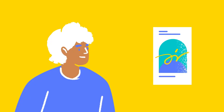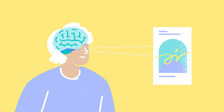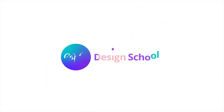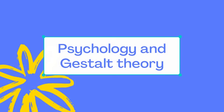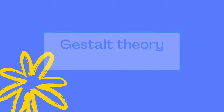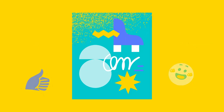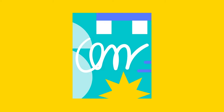A good designer makes things appealing to the eye. A great designer understands how the brain works. Let's learn how a little design psychology goes a long way. What happens when someone sees your design? How does their mind react to the message you're sharing? Designers need to consider this because psychology plays a powerful role in visual perception.